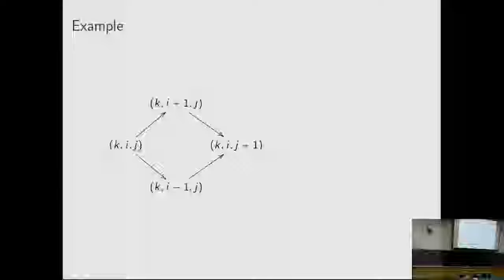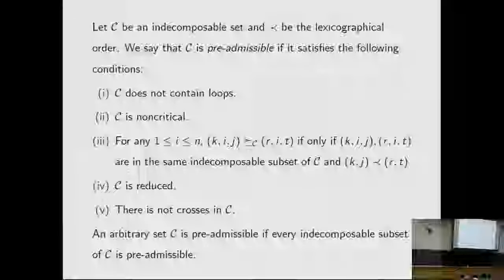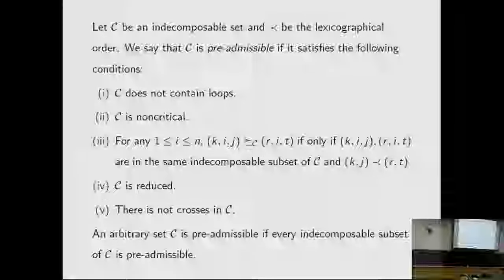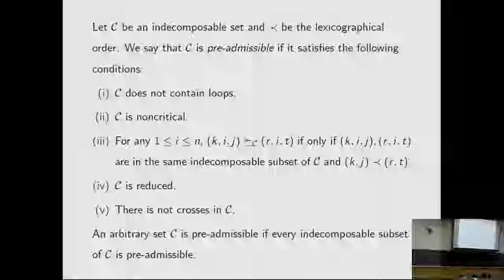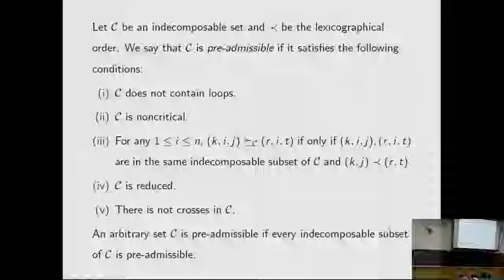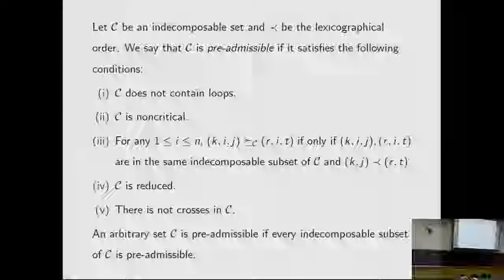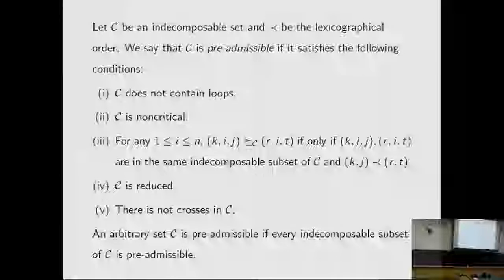Here is an example, and this example gives us the idea to describe all admissible sets. Let C be a decomposable set with a lexicographic order. We say C is pre-admissible if it satisfies the following conditions: C does not contain loops; C is non-critical; and for any i, K_{ij} is greater or equal to R_{it} if and only if the two are in the same indecomposable subset of C, and K_{ij} is less than R_{it}. Also C is reduced and there is no cross in C. An arbitrary set C is pre-admissible if every indecomposable subset of C is pre-admissible.